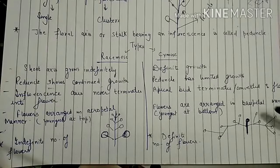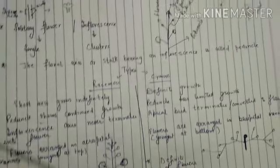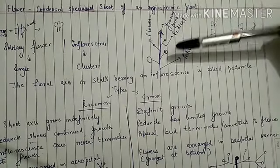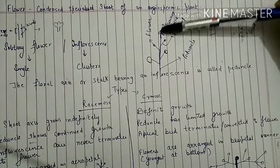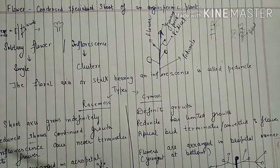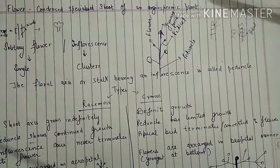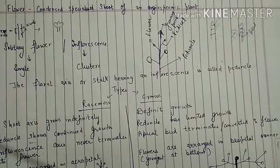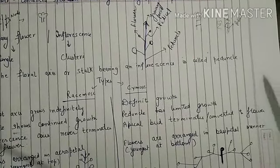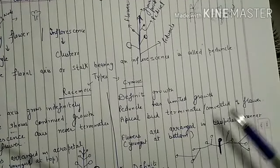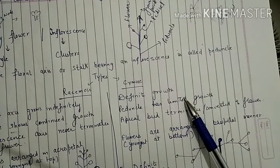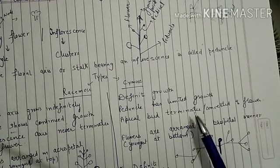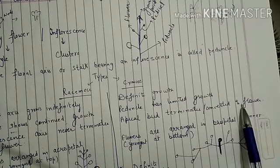Exactly opposite to racemose inflorescence is cymose inflorescence. In cymose inflorescence, there is definite growth — the growing peduncle terminates into a flower. The peduncle has definite growth as the apical bud terminates into a flower.